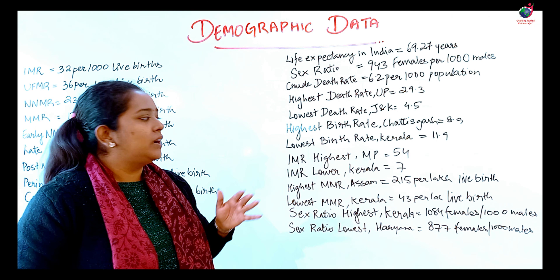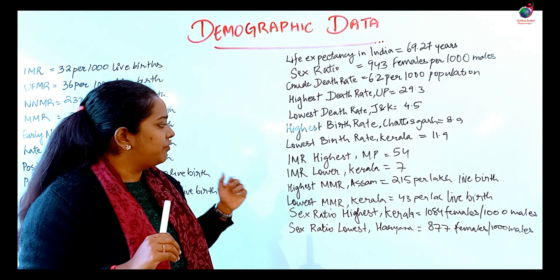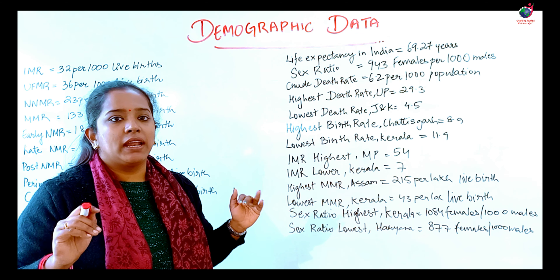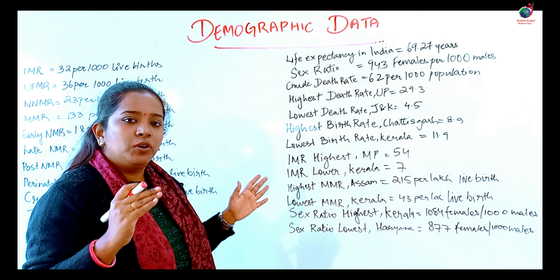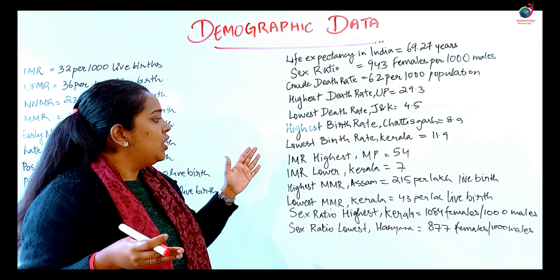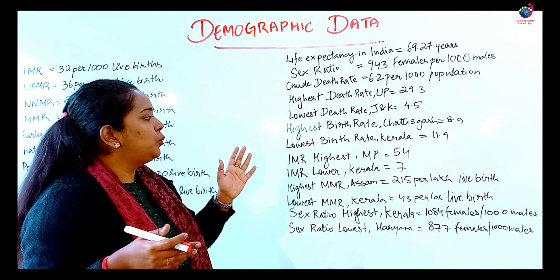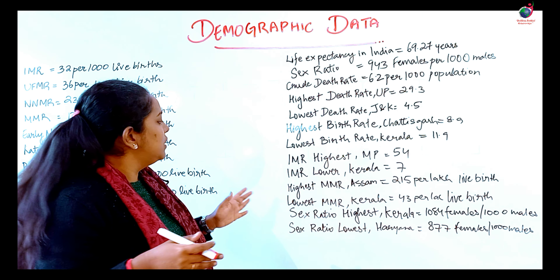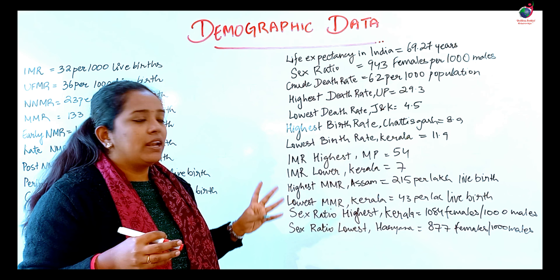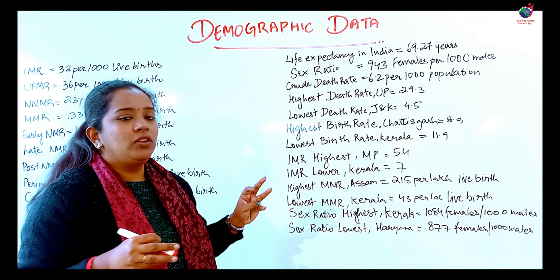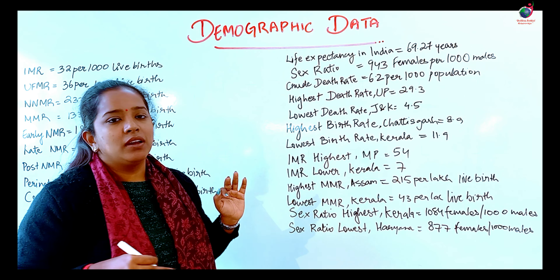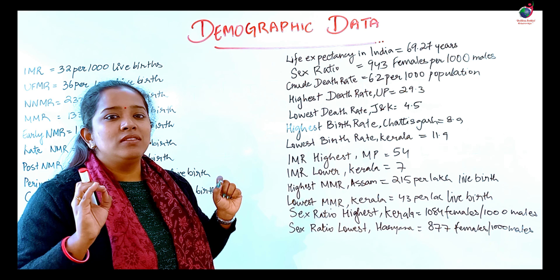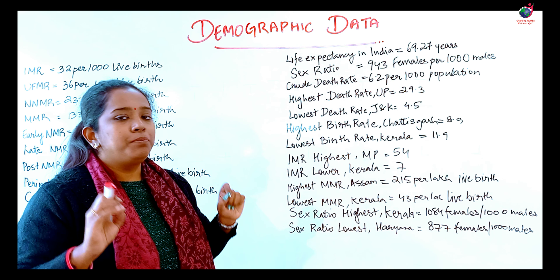The highest Infant Mortality Rate is in Madhya Pradesh, at 54, and the lowest IMR is in Kerala, at 7. The highest Maternal Mortality Rate is in Assam, at 215 per 1,00,000 live births, and the lowest MMR is in Kerala, at 43 per 1,00,000 live births. For sex ratio, the highest is in Kerala with 1,084 females per 1,000 males.